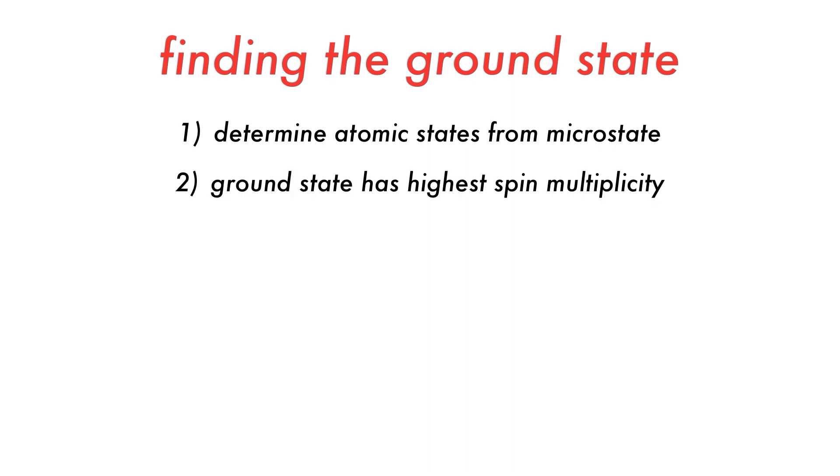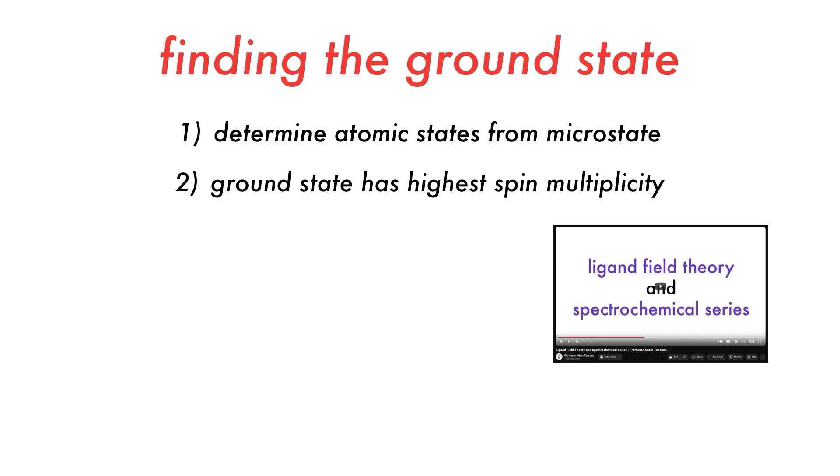Then, from these atomic states, the ground state will be found among those with the highest multiplicities, as this will reduce the coulombic repulsion energy and increase the exchange energy terms. Check out the video linked for more on these energy terms.